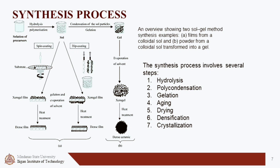Fifth is drying: the liquid phase is removed from the gel, leaving behind the porous solid material. Sixth is densification: the porous solid is heated to remove any remaining solvent and to increase its density. And the final step is crystallization: the densified material is further heated to cause crystallization, resulting in the final product of the sol-gel synthesis process.